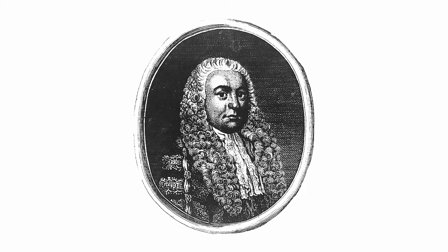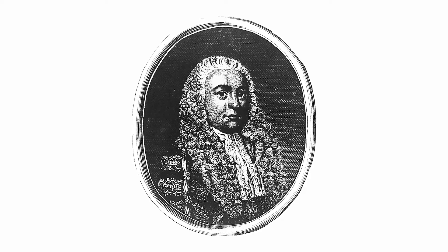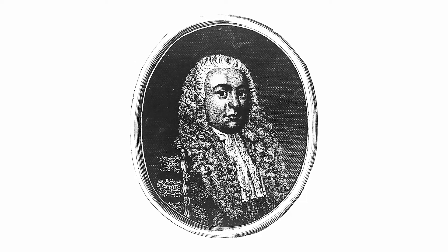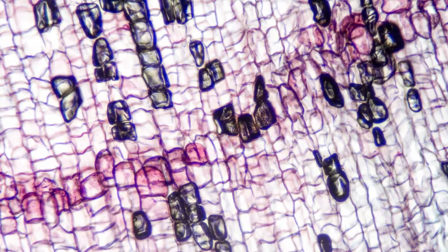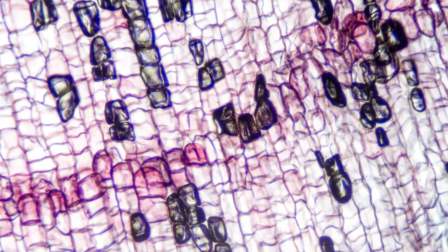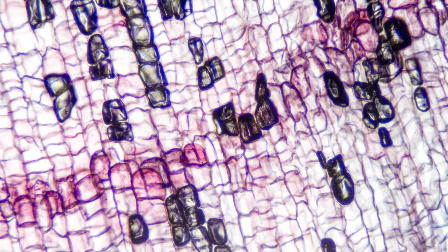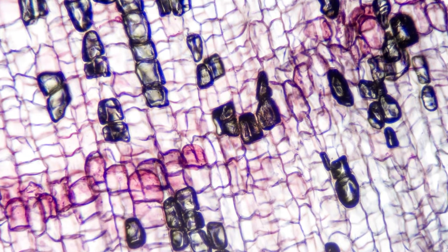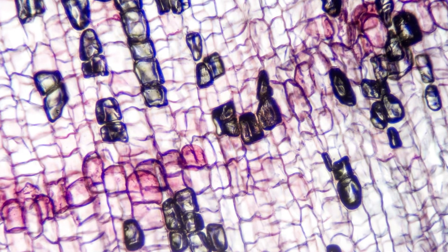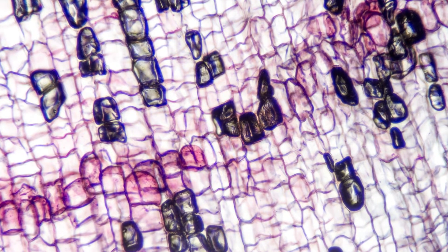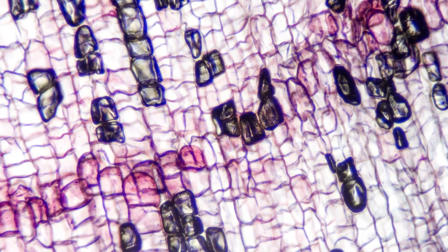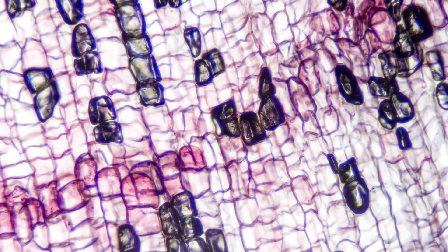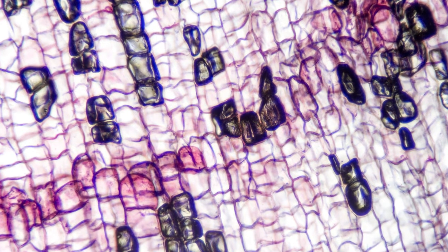In 1665, Robert Hooke, a scientist from England, was experimenting with one of the first primitive microscopes. As he studied a piece of cork under magnification, he noticed that the cork was divided into tiny microscopic sections. Hooke named these tiny divisions cells. This small discovery would change science forever.